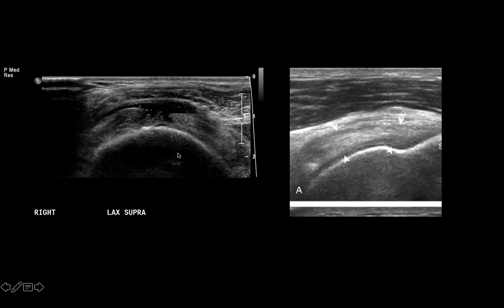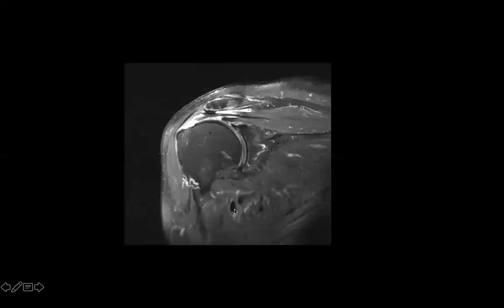This is the MRI correlate of the same exact patient. Here is the supraspinous muscle; this dark hypointense line is the myotendinous junction. The supraspinatus tendon should be dark on all sequences and continue all the way to the greater tuberosity, but instead there's fluid extending from the articular surface all the way to the bursal surface — confirming a full thickness rotator cuff tear on MRI.